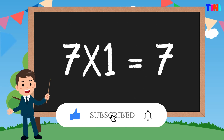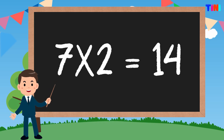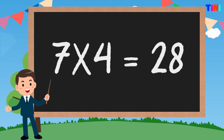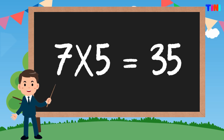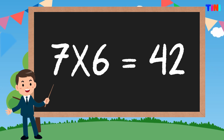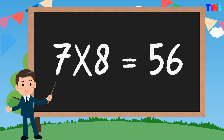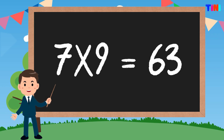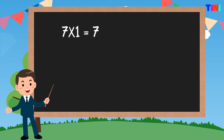Table of seven. 7 ones are 7. 7 twos are 14. 7 threes are 21. 7 fours are 28. 7 fives are 35. 7 sixes are 42. 7 sevens are 49. 7 eights are 56. 7 nines are 63. 7 tens are 70.